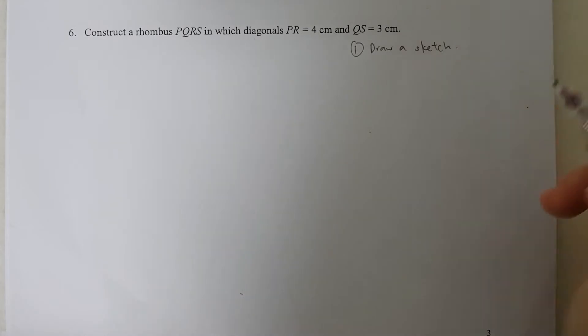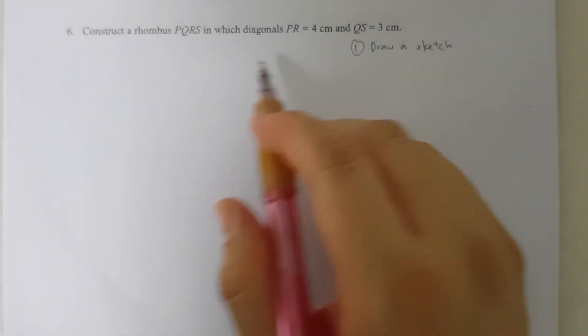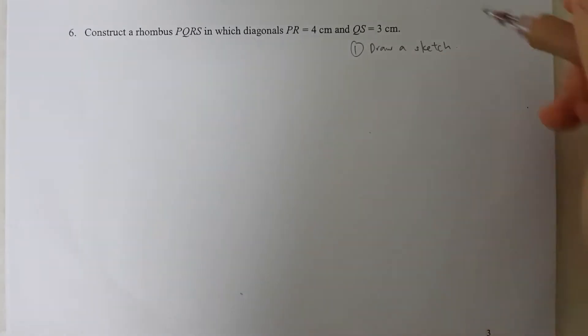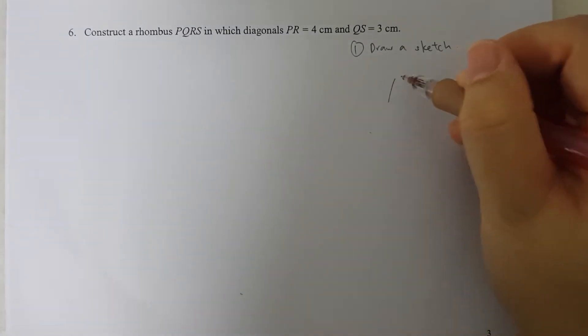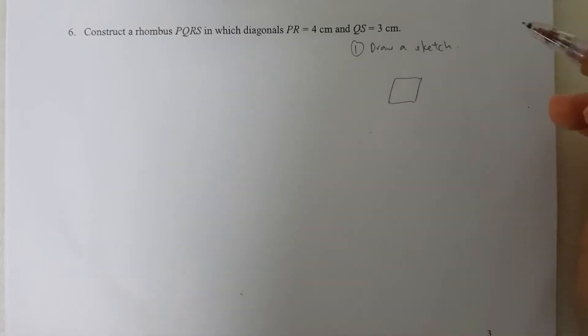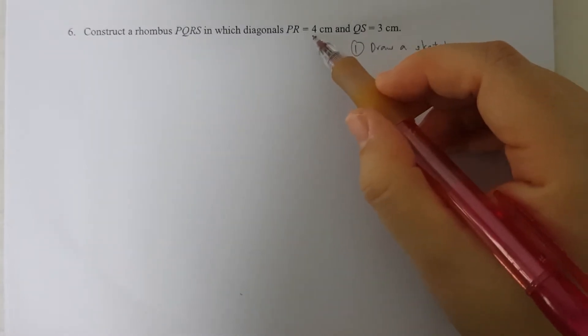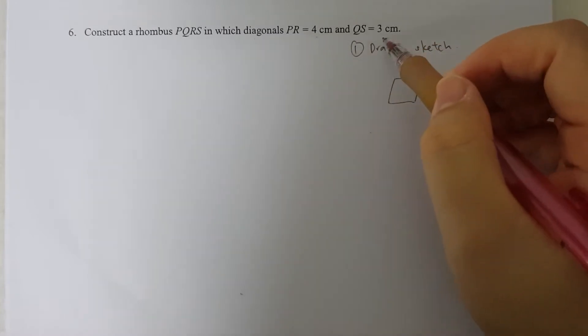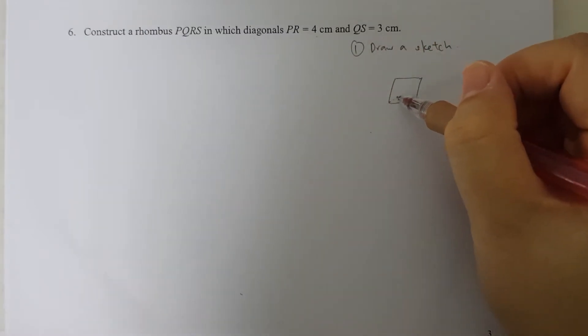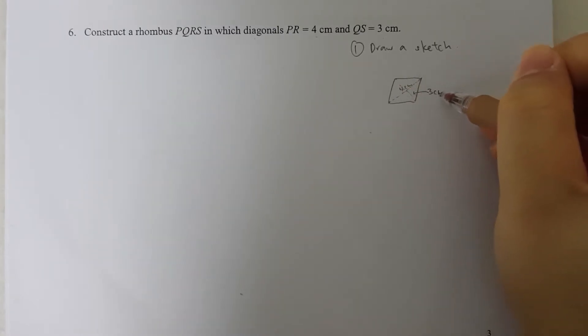So in this question we have a rhombus PQRS and they give us the length of the diagonals. I'll imagine my rhombus looks something like this, and the two diagonals are 4 cm and 3 cm. The longer side needs to be 4 cm and the shorter side would be 3 cm.